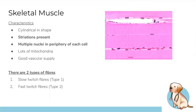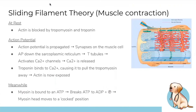A question from chat: what's a T-tubule? T-tubules are tubes that allow the action potential signal to travel deep into the muscle cell. Without them, the signal from the brain would only reach the outer parts of the cell. T-tubules carry the signal all the way down to the individual myofibrils and sarcomeres, potentiating the action potential throughout the entire muscle fiber.